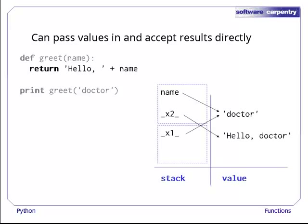Just before the function returns, Python has created two such variables, one in the global frame to refer to the string doctor before it's passed into the function, and one inside the function stack frame to temporarily store a reference to the result that is to be returned. Their actual names are a lot longer and less readable than underscore x1 and underscore x2, but that doesn't matter. They're never visible to programmers.